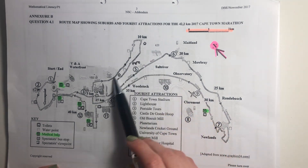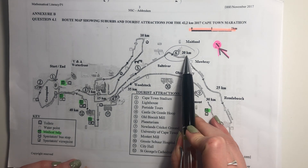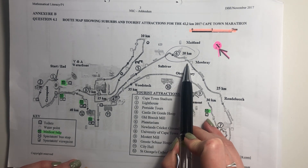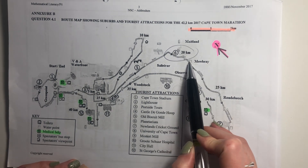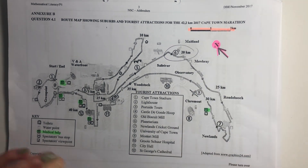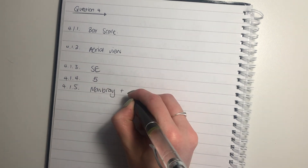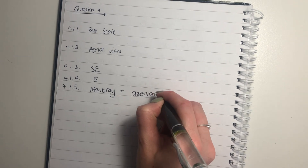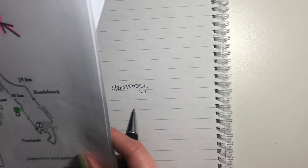Remember they run here, they run here, they go up, they go down, and then we're kind of around there. Remember it's not exactly 20 — it's going to be slightly past 20. So it's not going to be Saltrofia or Maitland. It's going to be a little bit further, so it's probably going to be Mowbray or Observatory or both. I'm going to write both: Mowbray and Observatory. Please remember to always check your spelling here, especially if it's a word given — they expect you to spell it correctly.